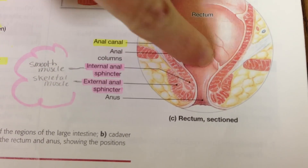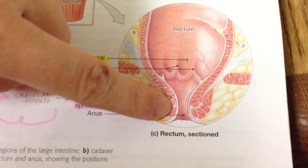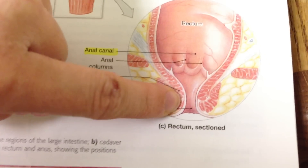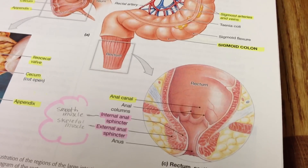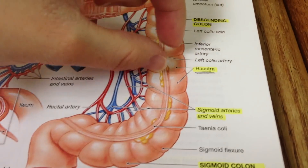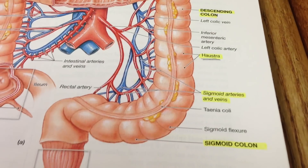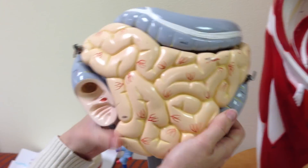Then you have the internal anal sphincter, which is smooth muscle, and then the external anal sphincter, which is skeletal muscle — which can be controlled by your skeletal muscles. Also, these little ridges: make sure you know that those are the haustra. And then we're just going to show on the model right here again.